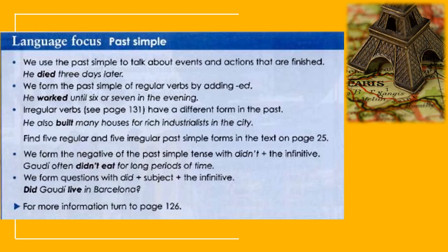To make a negative sentence, we add 'did not' after the subject and before the verb. For example: 'Gaudi often did not eat for long periods of time.' — Gaudi seringkali tidak makan untuk jangka waktu yang lama. To make a question, we use 'did' at the beginning plus subject plus verb one. For example: 'Did Gaudi live in Barcelona?'